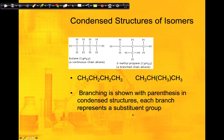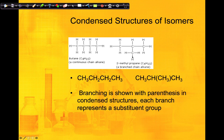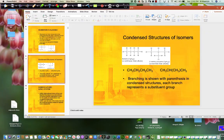To show branching in a condensed structure: in the main chain, the first carbon bonds to three hydrogens (CH₃), followed by CH₂, CH₂, and CH₃. But at a branched carbon, that carbon bonds to one hydrogen and also to a CH₃ group, which is different from just H. That CH₃ branch is written in parentheses. So whenever you see parentheses in a condensed structure, that indicates a branch.